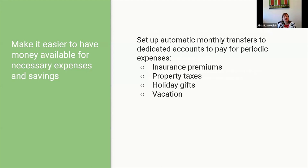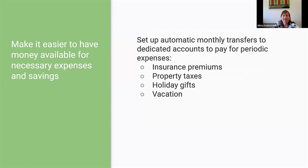You can use that same strategy with all kinds of things: insurance premiums, property taxes, and also fun things. If you want to spend $600 on Christmas gifts, you can save $50 every month to a savings account called the gift account, and when Christmas rolls around you have $600 available. There used to be something called a Christmas club — it's the same idea, but you can set it up yourself for vacations or whatever expenses you want.